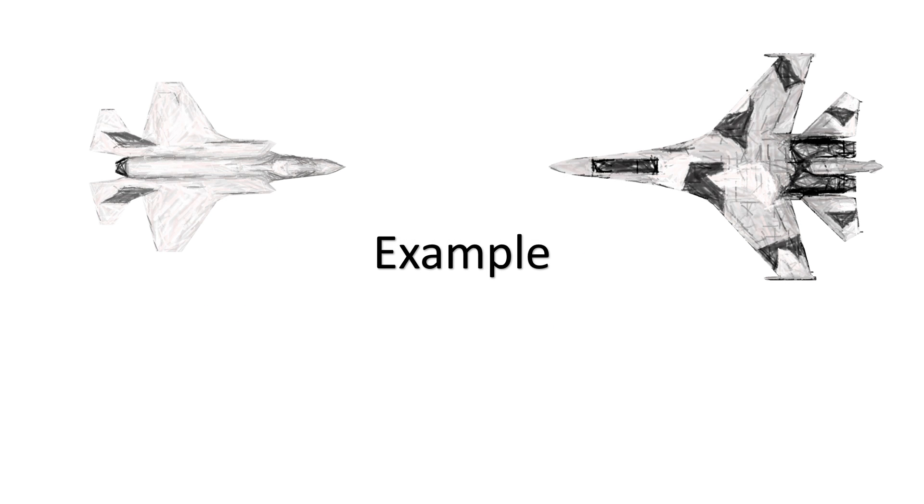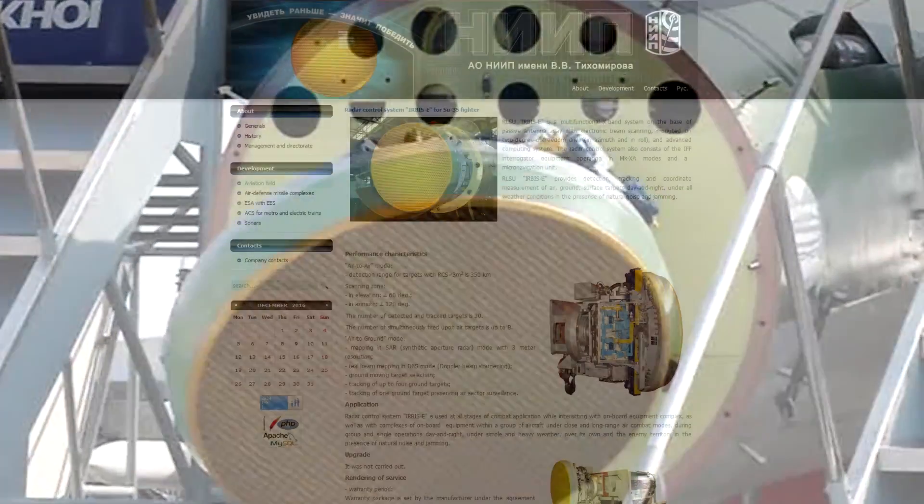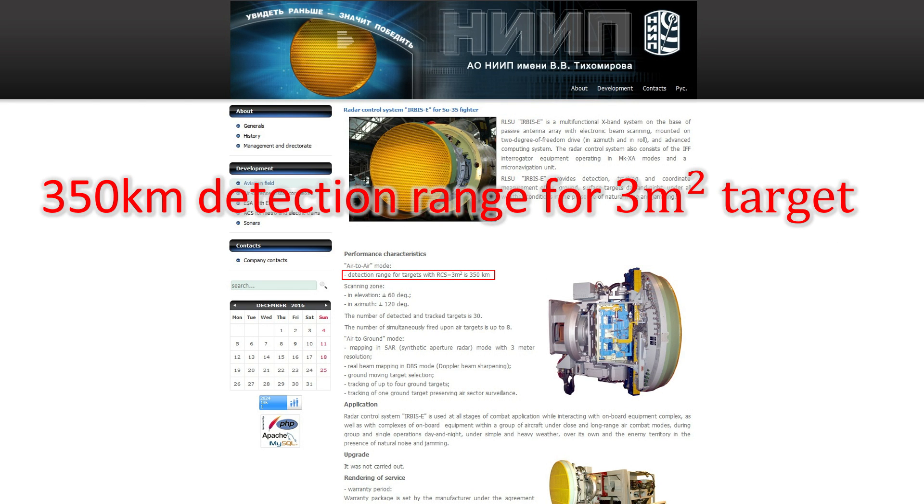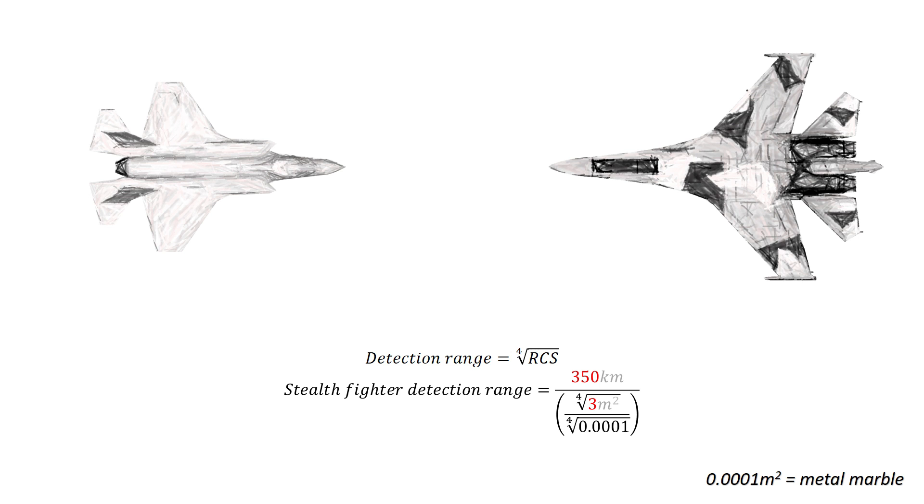Let's look at how the radar equation can be used by looking at an example of a stealth fighter versus a non-stealthy fighter such as the Su-35. The Su-35 uses the Irbis PESA radar. According to the manufacturer of the radar, it has a 350 kilometer detection range for a three square meter target. To find out approximately how far that radar can detect a stealth fighter of a given size, we can look at the relationship that detection range has with target RCS. First we put in our known Irbis performance parameters, then we add in the target RCS, and finally we solve the equation.